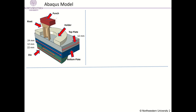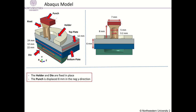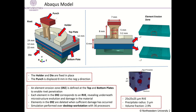The SPR model contains the six parts shown. The geometry is given. The holder and die are fixed in place. The punch displaces 8mm in the negative Z-direction causing the rivet to move. The plates make up the multi-scale region. In this region, microstructure responses at each integration point in the micro-scale finite element are computed by RVEs.